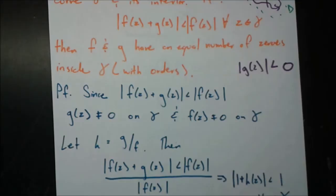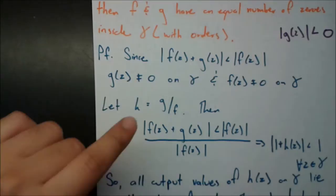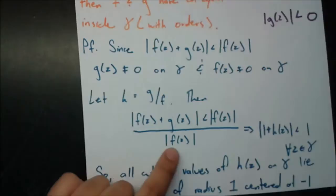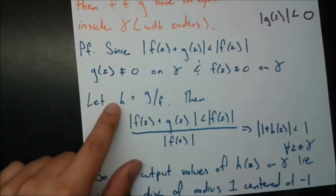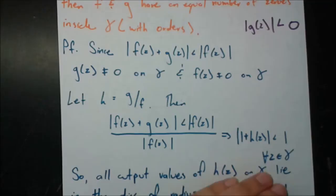Next we define a new function h = g/f. We divide the inequality through by modulus f(z). On the left side we get modulus(f(z) + g(z)) / modulus f(z), which splits into 1 + modulus g(z)/modulus f(z), which we define as h. On the right side we have modulus f(z)/modulus f(z) = 1. So this is a restatement in terms of h: the modulus of 1 + h(z) < 1.